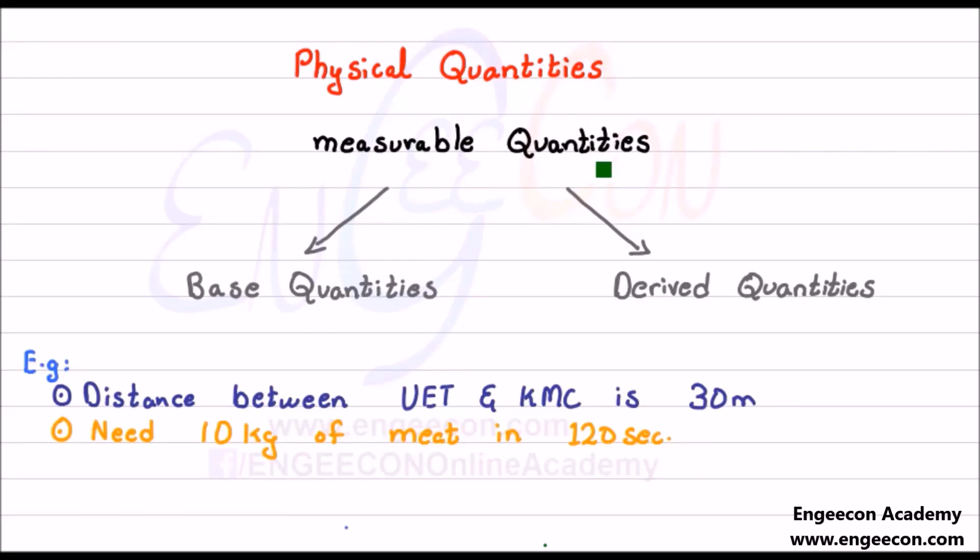Physical quantities are measurable quantities which can be measured. For example, the distance between UTP Shower and KMC is 30 meters.